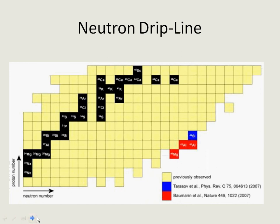This is a close-up of a drip line. All of these yellow boxes — here's neon, protons on the vertical and neutrons on the horizontal. If you add a proton to neon, these are all the isotopes that have been observed, and they're trying to figure out how far that will extend. That's one area of study in nuclear chemistry.